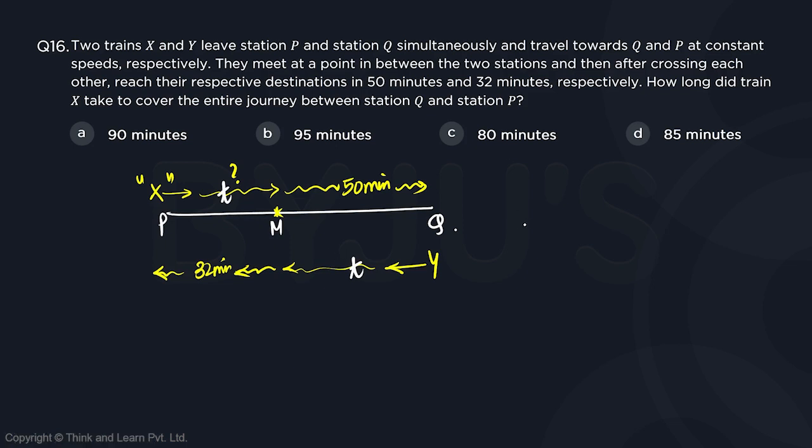And this meeting time is given as geometric mean of the time they take to reach their respective destinations after meeting. So this is going to be under root 50 into 32, which I can write as 25 and 2 can go there and become 64. So this becomes 5 into 8, which becomes 40.